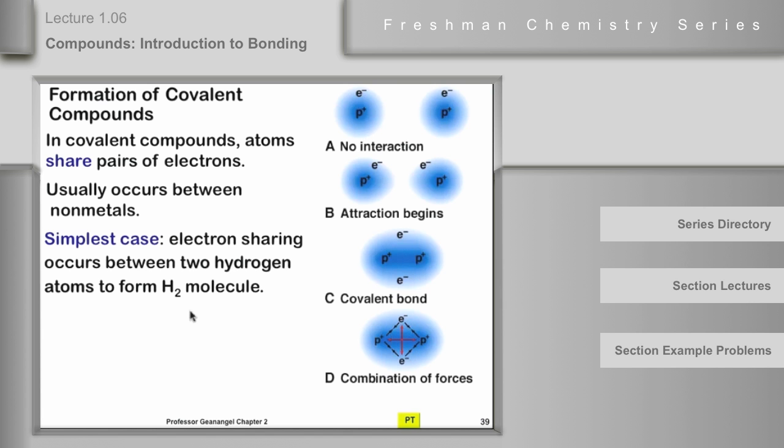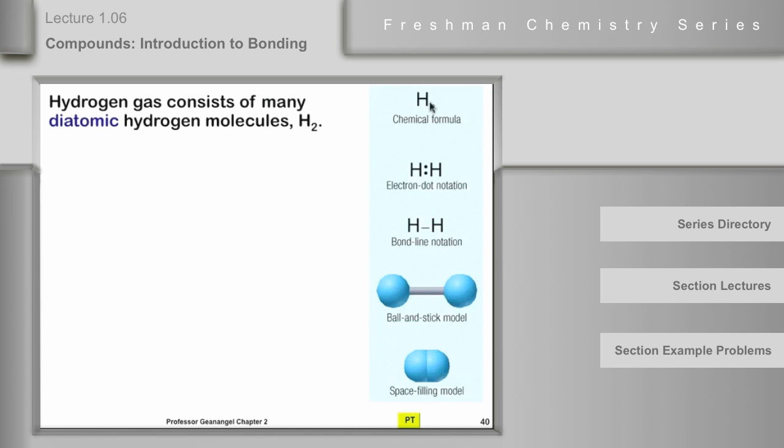Now four attractions overcome two repulsions and the difference between the two will be the net force that's holding this combination together. This is H2 and H2 is represented in different ways. We can write a simple formula like this. We can put the pair of electrons in with electron dot notation like this. We could just put in a line for that pair of electrons or we could write a ball and stick model or a space filling model.